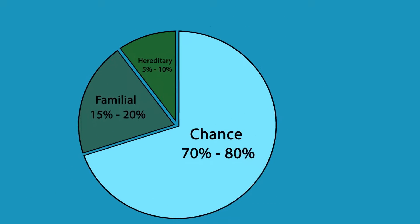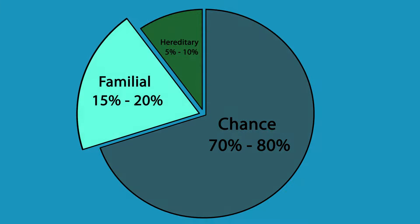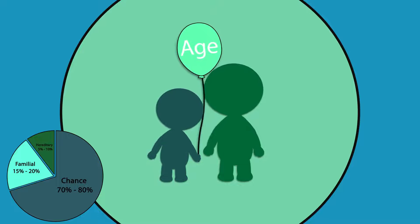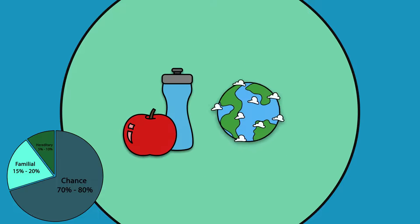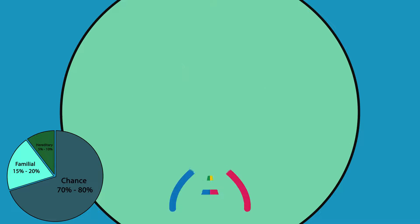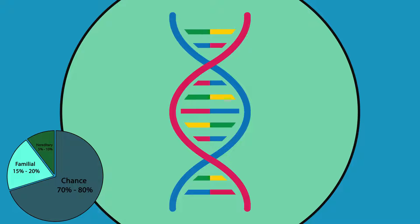About 15 to 20% of cancers have a familial cause. Familial cancers can also be caused by age, lifestyle, environment, and chance, just like sporadic cancers. But small genetic factors may also play a role in developing familial cancer.